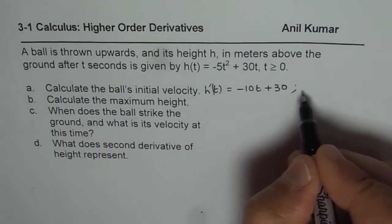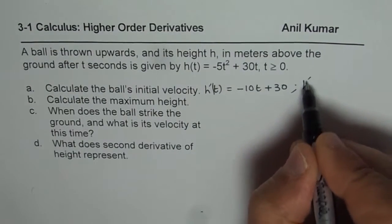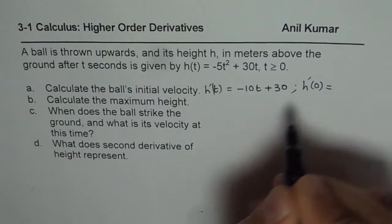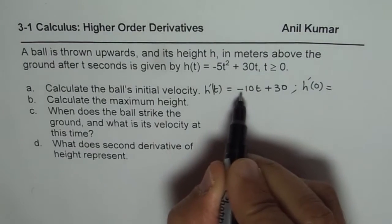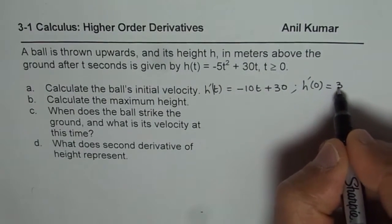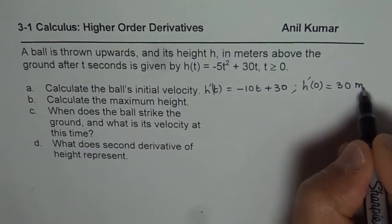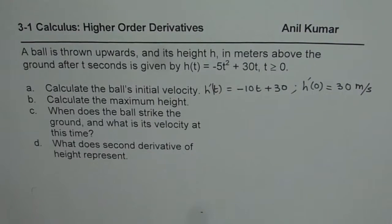Initial velocity means when t is 0. So h'(0) will be, we will substitute 0 here, first part is 0, we are left with 30. The units are meters per second. Now in word problems, writing units is very critical. You should always include them in your answer.